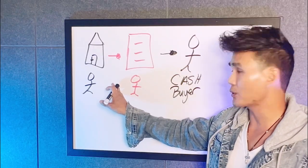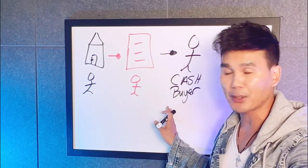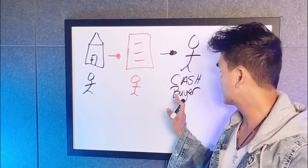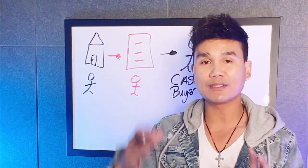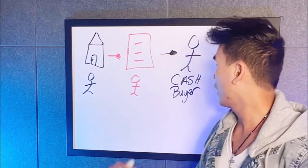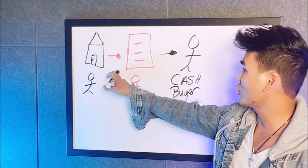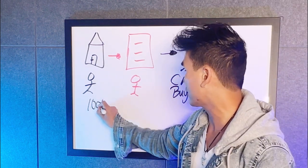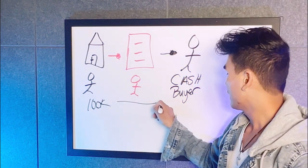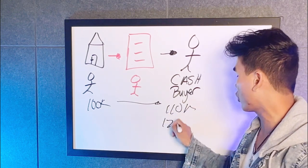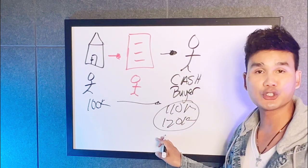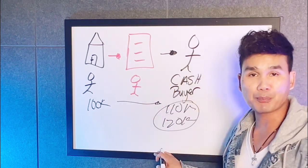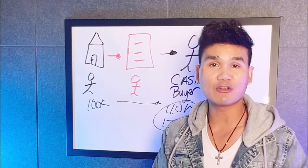Once the property is under contract, you're going to market the contract — not the property. You're going to market the contract and sell it to a cash buyer. Typically this is a fix-and-flipper or someone who wants to buy and hold. Once you find the cash buyer, you sign the contract over to them for a profit. Let's say you got the property under contract for $100K — you can market it up to $110K or $120K, depending on how much you want to make. You assign the contract to the cash buyer for a profit. No buying, no fixing. That's how you get paid.